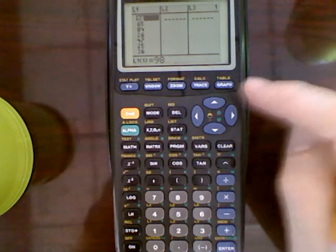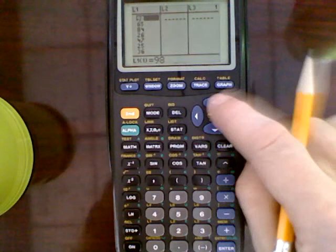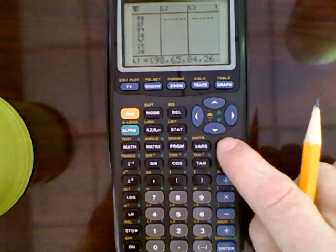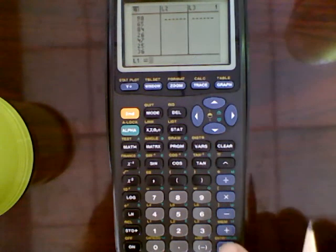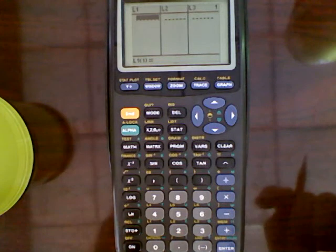We want to enter the data in a list. Right now there is some data in here that we don't want to use, so we'll clear those out. We'll arrow up, then press clear, and then enter. Now we're ready to put our data in.